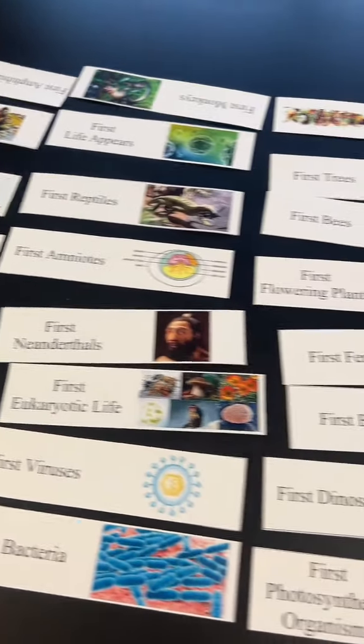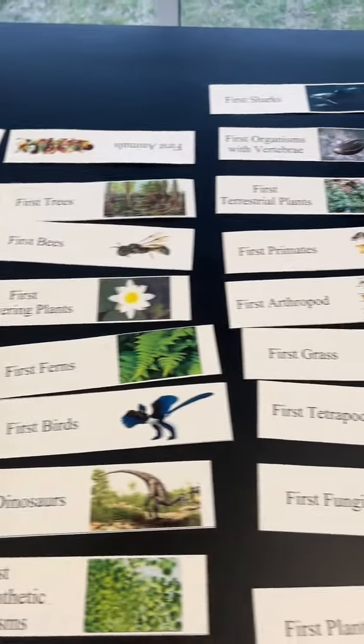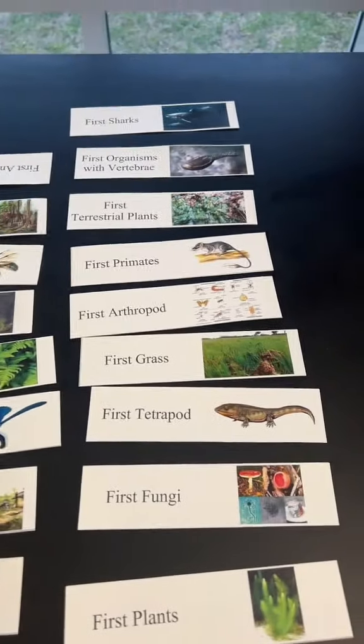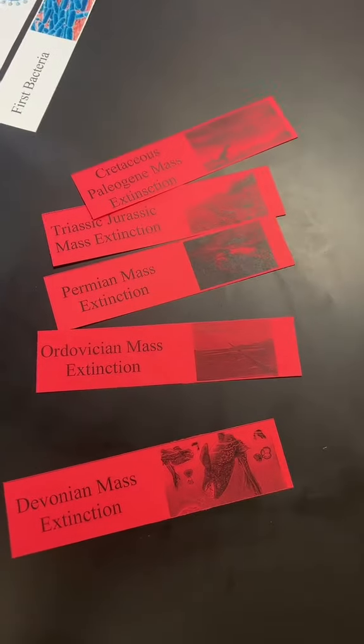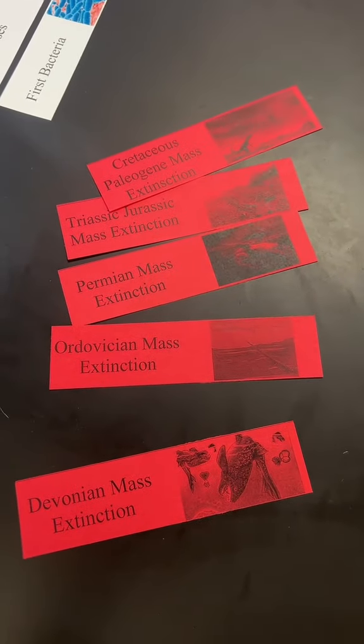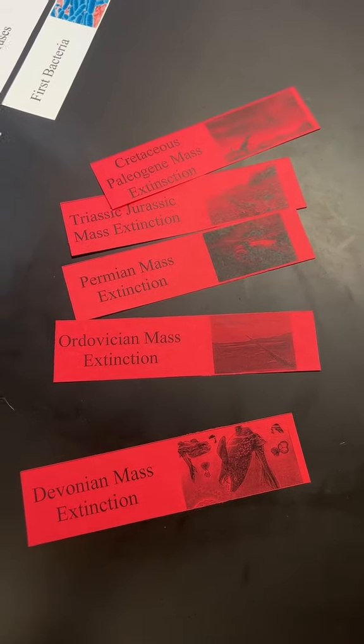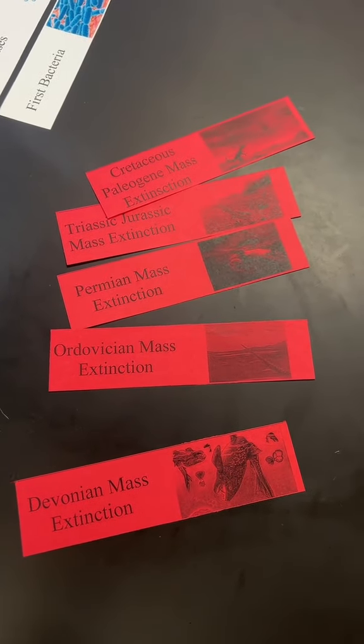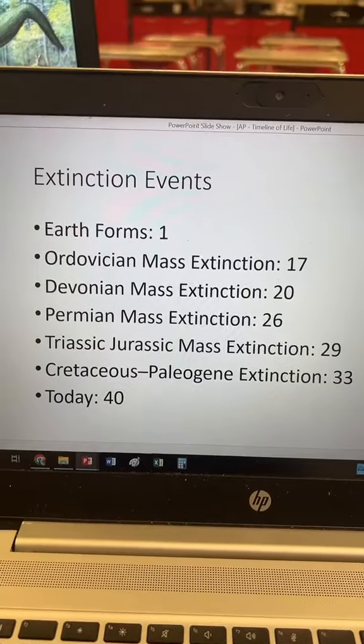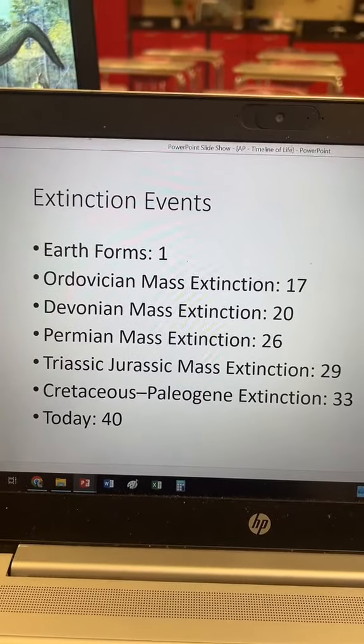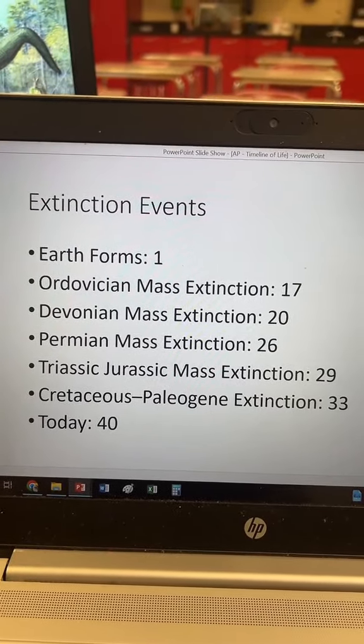For my AP Biology class there are about 40 of these life event cards. I also give them mass extinction cards to help organize where different events occur, and I give them the placement of these mass extinctions just to help them out. When they're done it should look something like this.